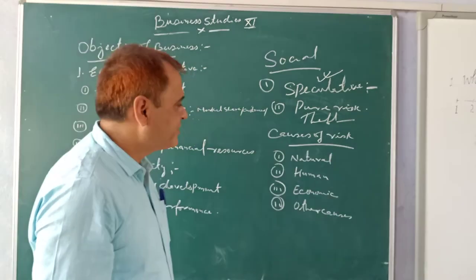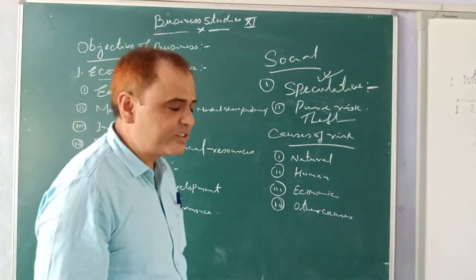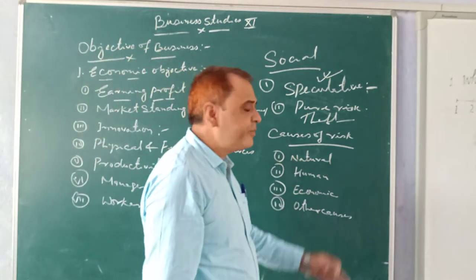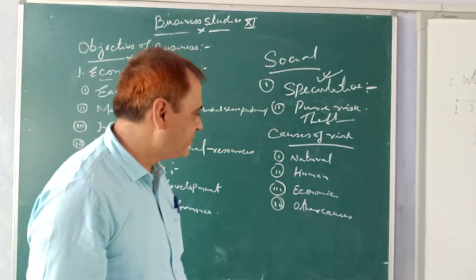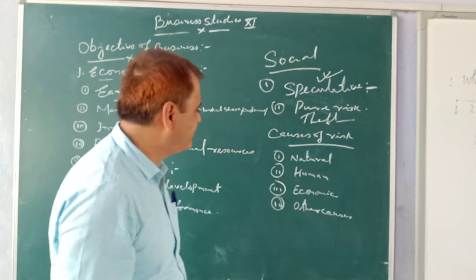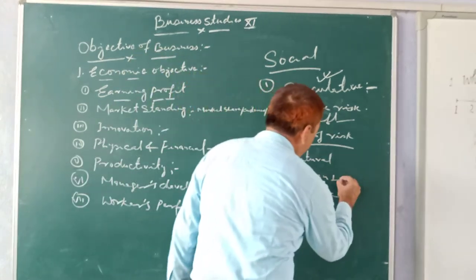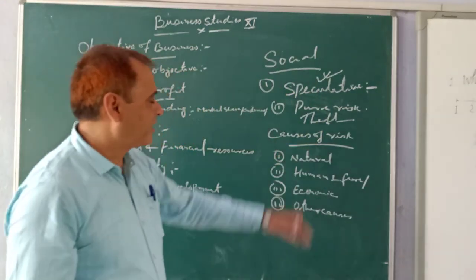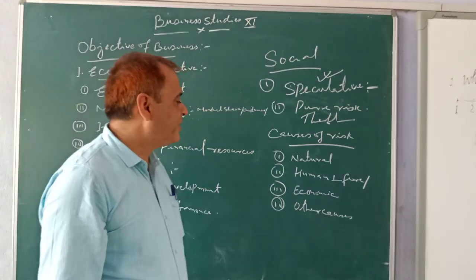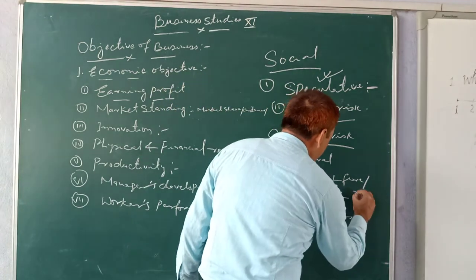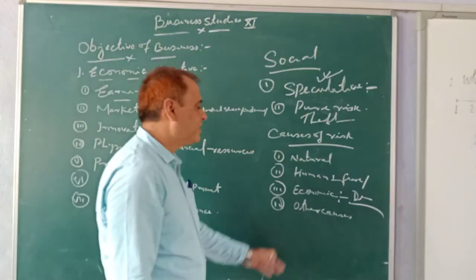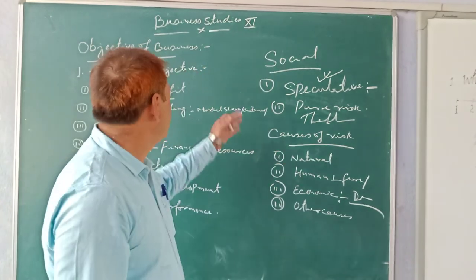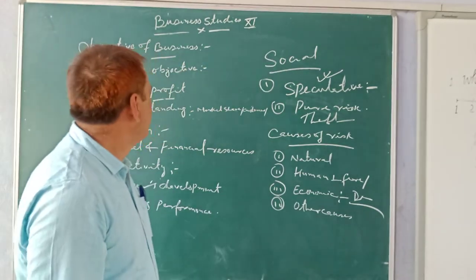There are causes of risk in business. Natural risks include floods, wind, and other natural changes. Human risks are caused by humans, such as fire, theft, or fraud. There are also economic causes — changes in demand and supply and market conditions. Other causes include destruction and lockdowns, which are also causes of risk to business.